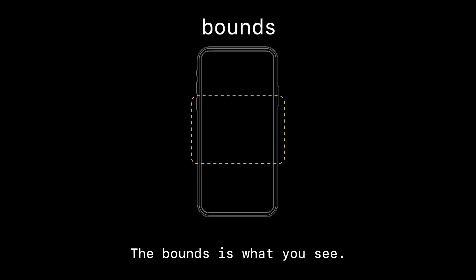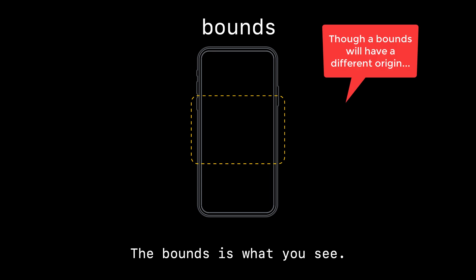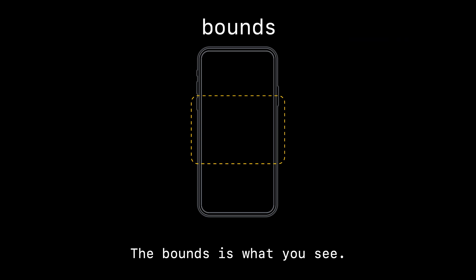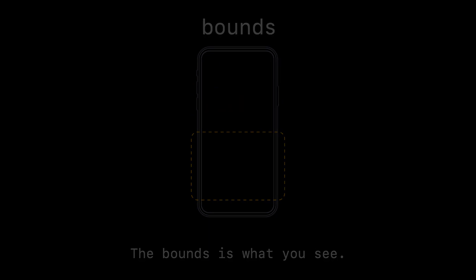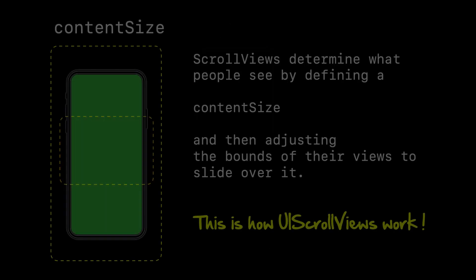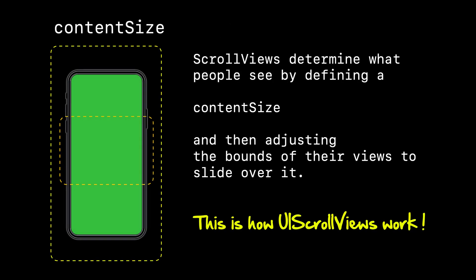Along with a frame, every view also has this concept called the bounds. The bounds controls what you see. Initially a frame and a bounds will be exactly the same on a UIViewController, so when you present a view, what you see is what you get. But the trick with the bounds is that by adjusting a view's bounds, you can change what people see.